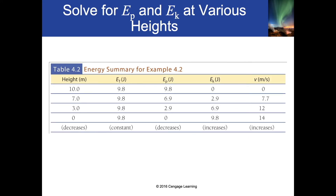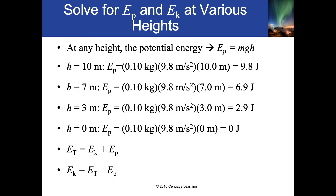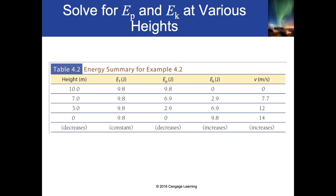Looking at the chart: the potential energy is super high at the top and gets lower as you go down. The kinetic energy is actually highest when you're at the lowest point, and velocity is also highest at the lowest point. The higher you are, the faster you can travel by the time you reach the bottom.